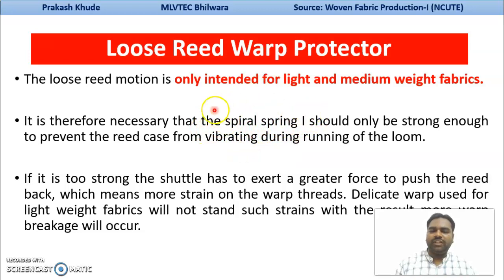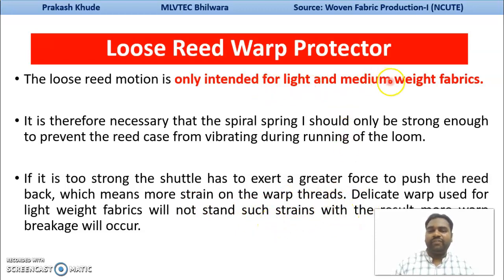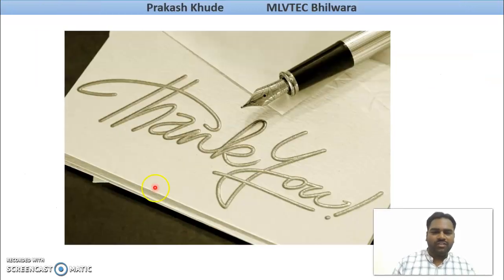For that control of vibrations during normal working, the spiral spring is much more important. If it is too strong, the shuttle can exert greater force to push this reed backward, which means more strength on your warp thread. That will create difficulty if you are having delicate yarn, because this mechanism is for light and medium-weight fabric. It will not withstand such strength, which will result in warp breakages. Thank you so much. Stay tuned to my next videos where we will discuss about the fast reed warp protector mechanisms. Stay tuned and subscribe to my channel.